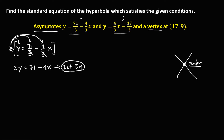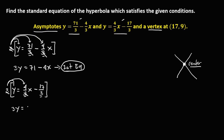From the second equation of asymptotes, we have y equals 4 over 3 x minus 17 over 3. To simplify, multiply the whole equation by 3 because the denominators are 3. Distributing: 3y equals — cancel the 3 — 4x, then to this term cancel the 3, giving negative 17. So the second equation is: 3y equals 4x minus 17.